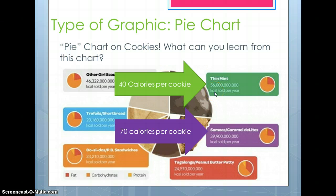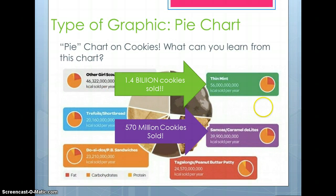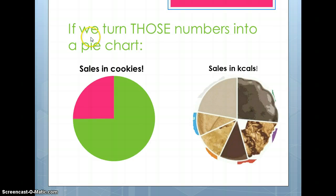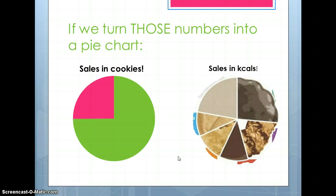KCALs, by the way, refer to 1,000 calories. If you look at the cookies themselves — Thin Mints are 40 calories per cookie, whereas Samoas are 70 calories per cookie. When you break that down and actually calculate it out, Thin Mints sold 1.4 billion cookies and Samoas sold 570 million cookies. What does that look like if we put it back into its own pie chart? We sold pretty much three times more Thin Mints than Samoas if you're looking at actual cookies. Look at the difference — look how misleading this can be. When you turn these numbers back into pie charts — sales in KCALs versus sales in cookies — look how close they look in the KCALs version. But when you isolate them and turn them into actual cookies instead of calories, it gives you a much different picture of how many cookies were sold. This is why you need to be very, very careful and make sure you're reading all the details in your charts.